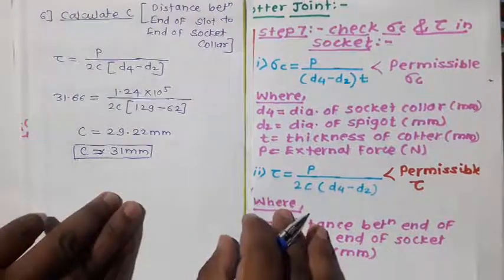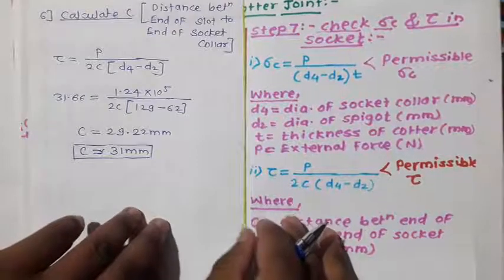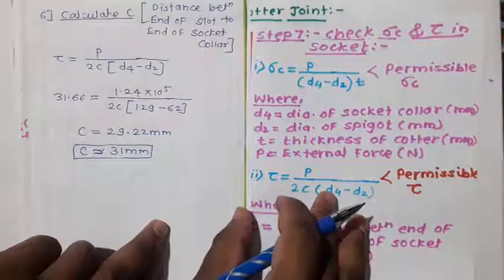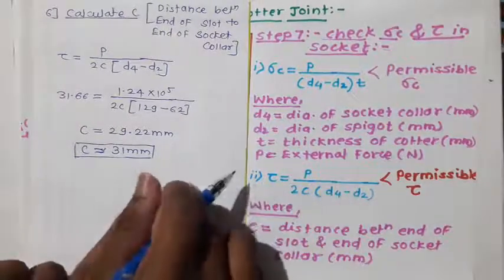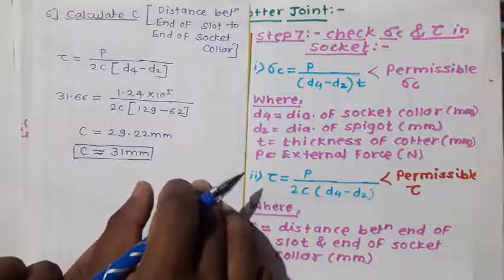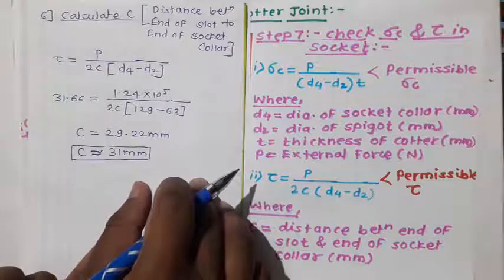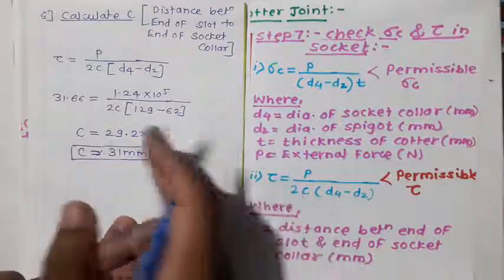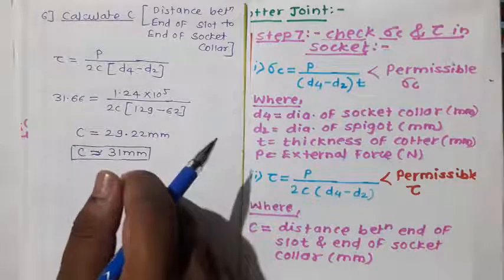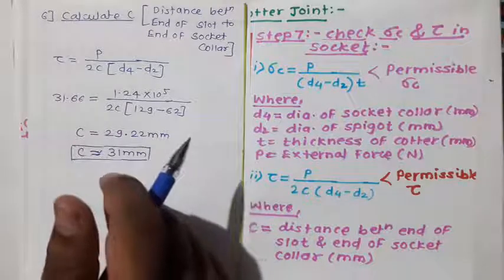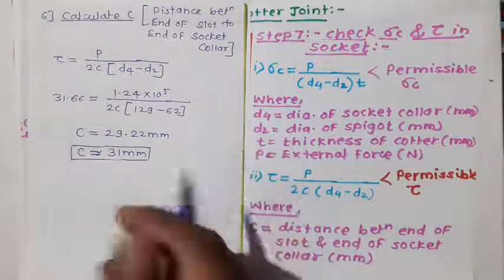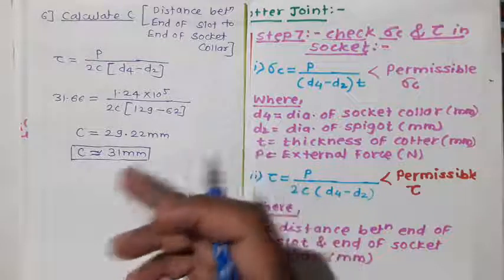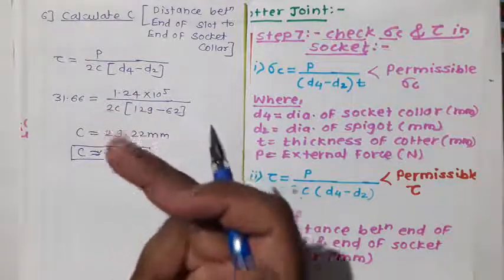This problem is important because here you do not have to use all seven steps. You only use the relevant equations from the design procedure of the cotter joint to find the parameters asked — in this case D1, D2, D4, and C. Also, since the diameter of the rod was given but P was not, we first calculated P and then proceeded to determine D1, D2, D4, and C.